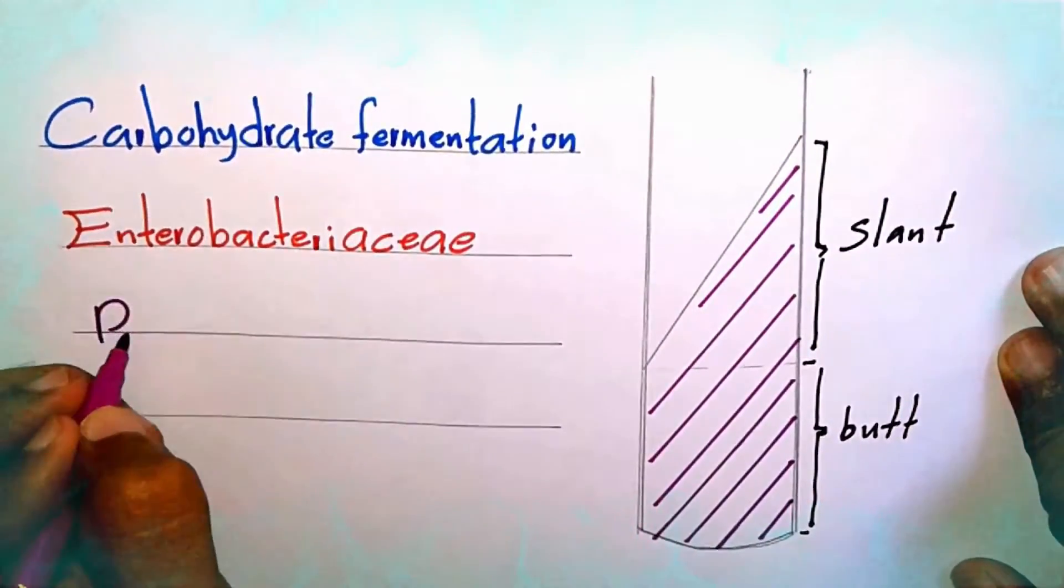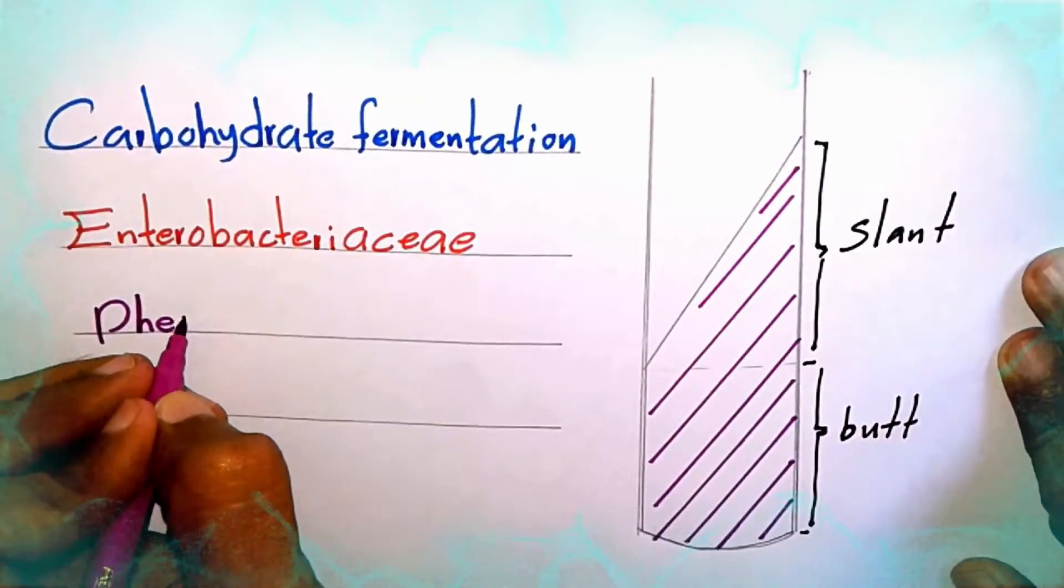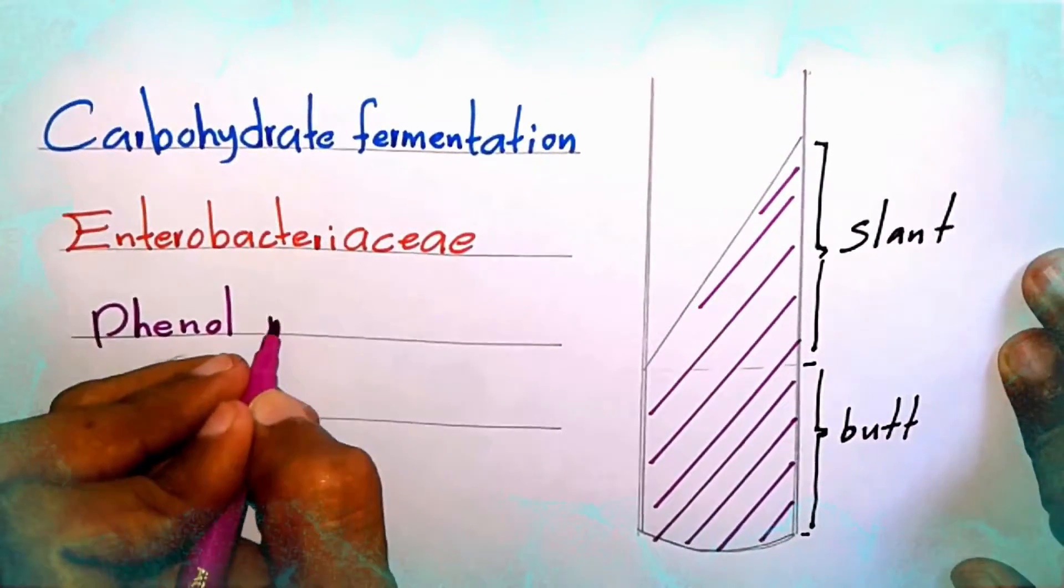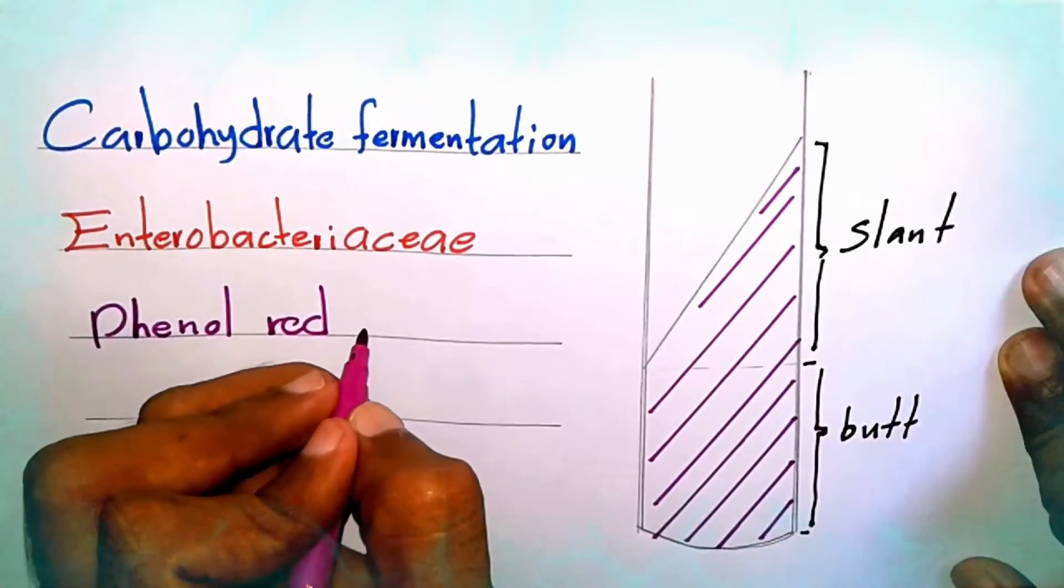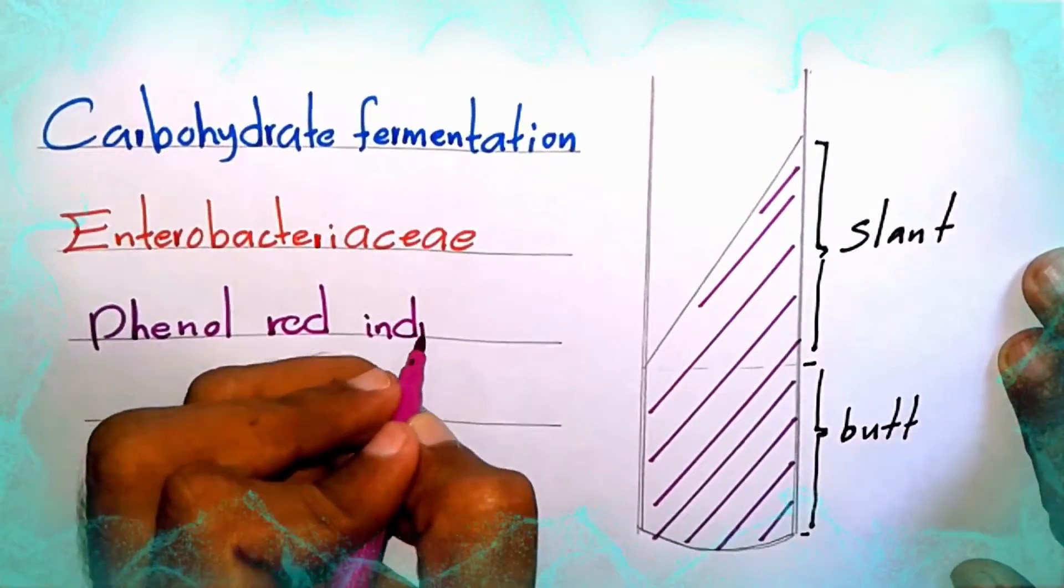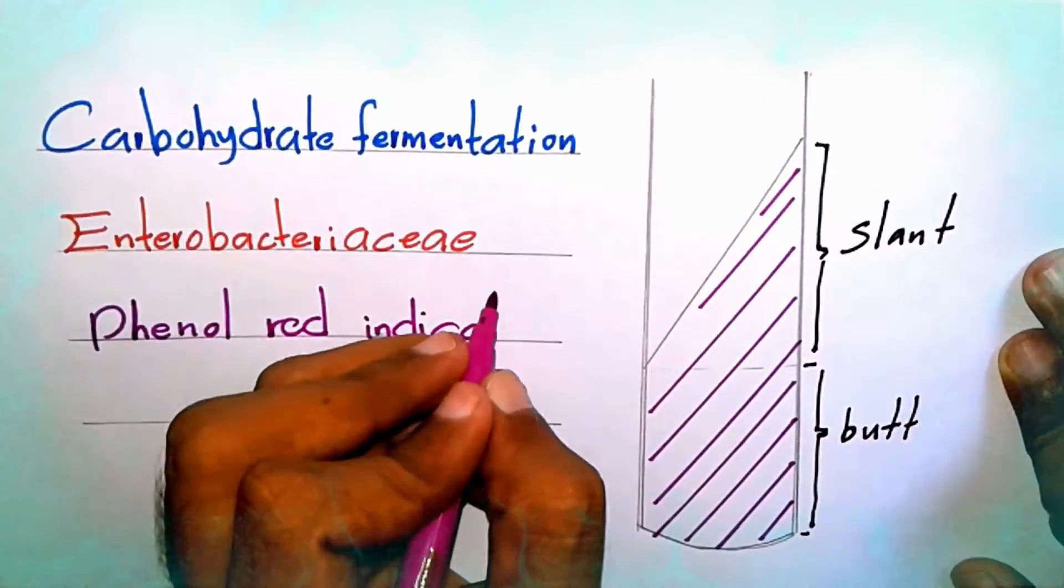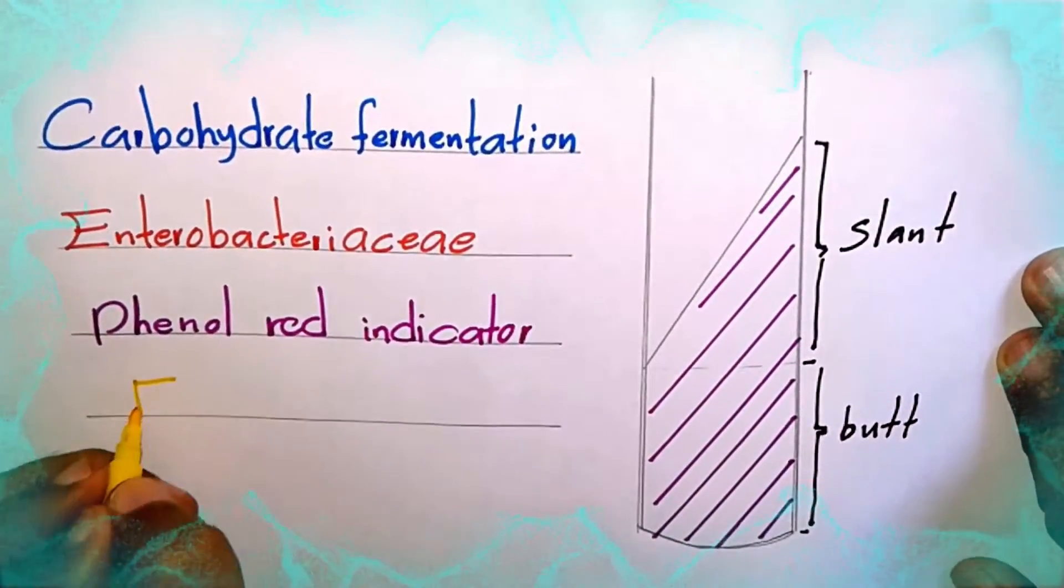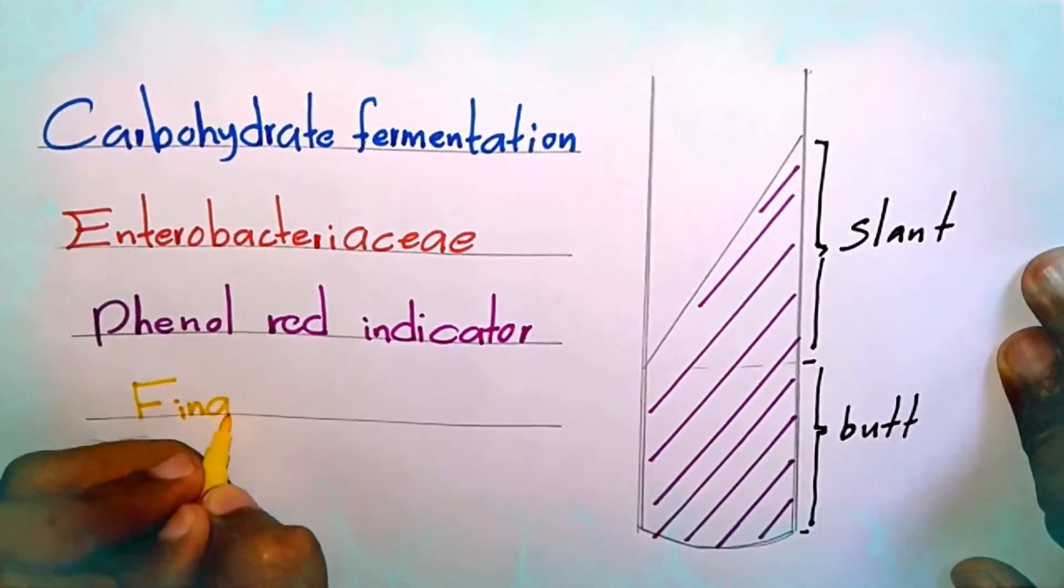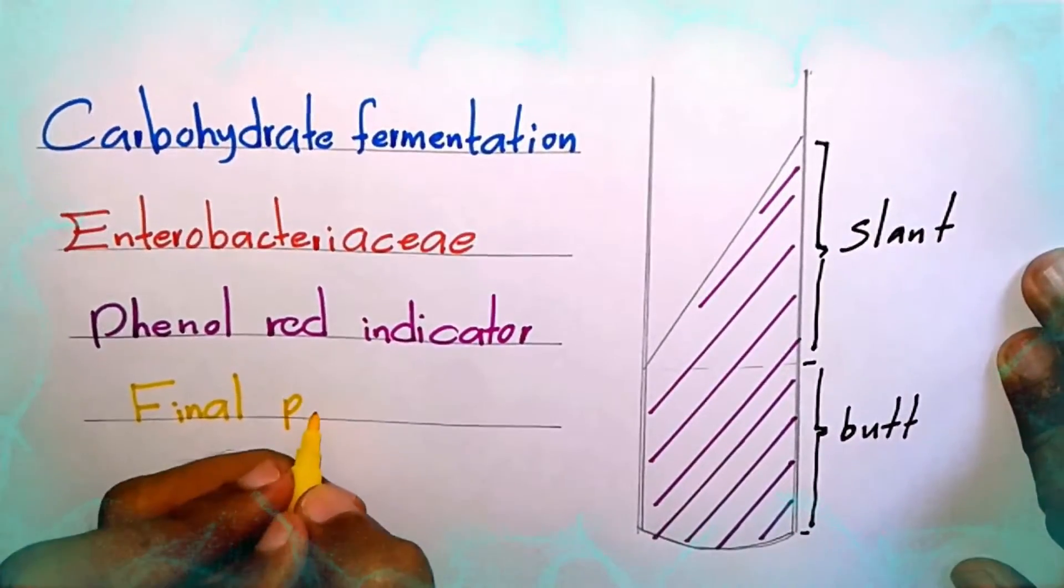This KIA includes Phenol Red Indicator. The final pH of the KIA is 7.4.